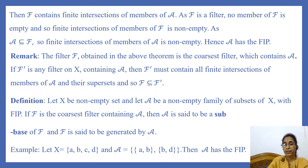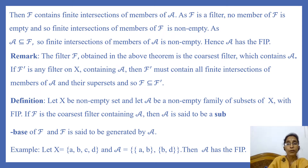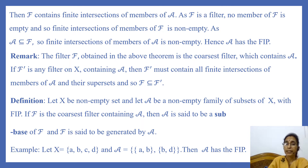As F is a filter on X containing A, F contains finite intersections of members of A also. As F is a filter, no member of F is empty, and so finite intersections of members of F are non-empty. Since A is contained in F, finite intersections of members of A are also non-empty. Hence A has the finite intersection property.